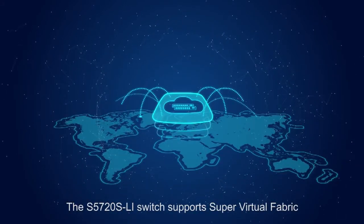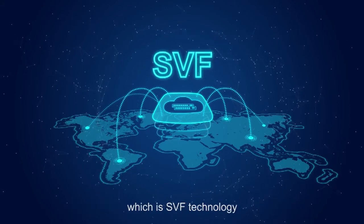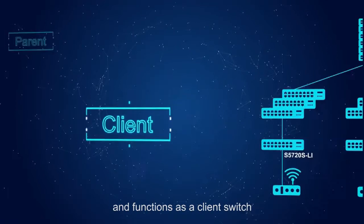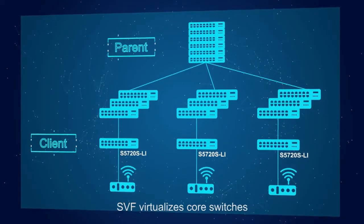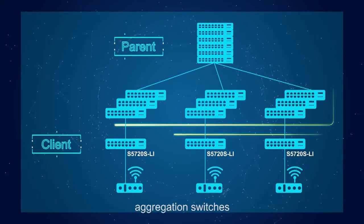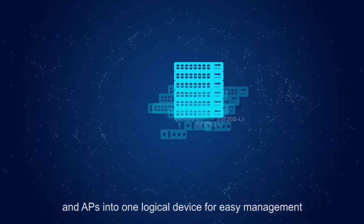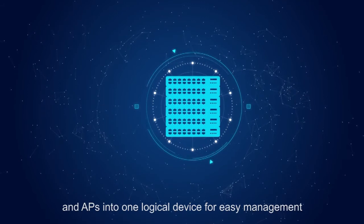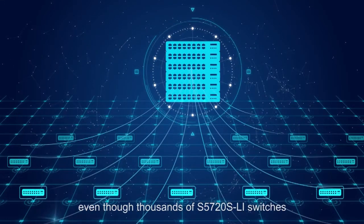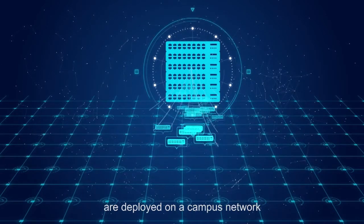The S5720S-LI simplifies O&M. It supports Super Virtual Fabric (SVF) technology and functions as a client switch. SVF virtualizes core switches, aggregation switches, access switches, and APs into one logical device for easy management. We only need to manage one device even though thousands of S5720S-LI switches are deployed on a campus network.